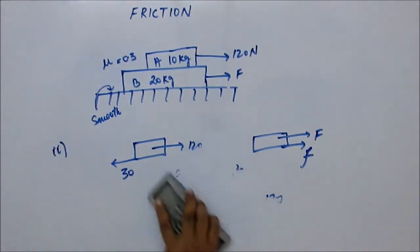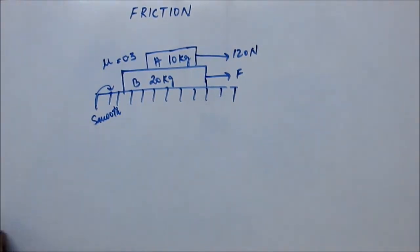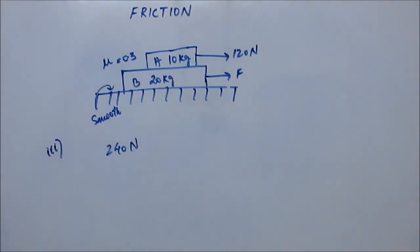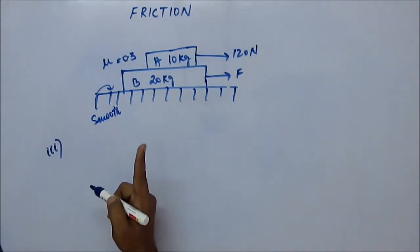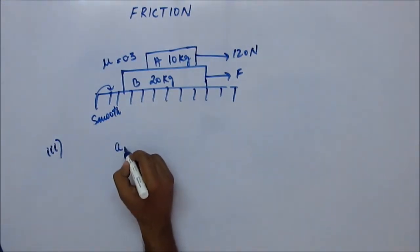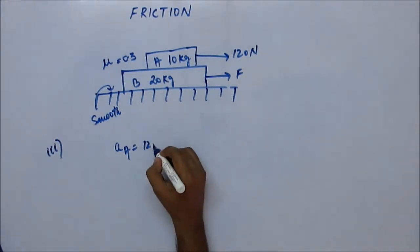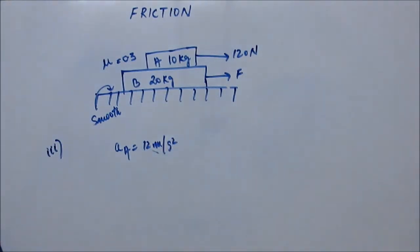150 Newton is the minimum force required for both blocks to move together. Now the third case: what should be the value of force F so that the block moves together without any friction force acting? The answer is 240 Newton. In the FBD of A the only horizontal force is 120 Newton, so acceleration of A is 12 m/s², acceleration of B should also be 12 m/s², and the force is obviously 240 Newton.